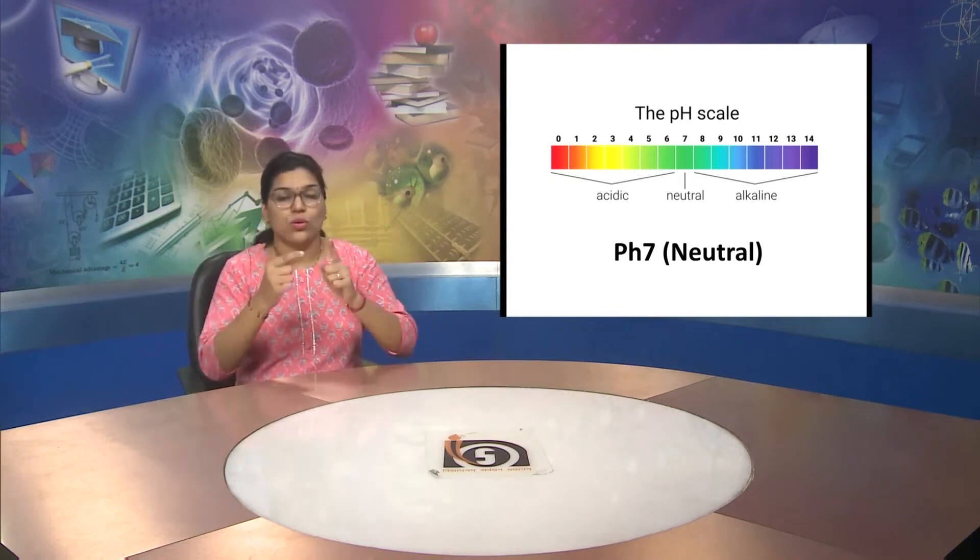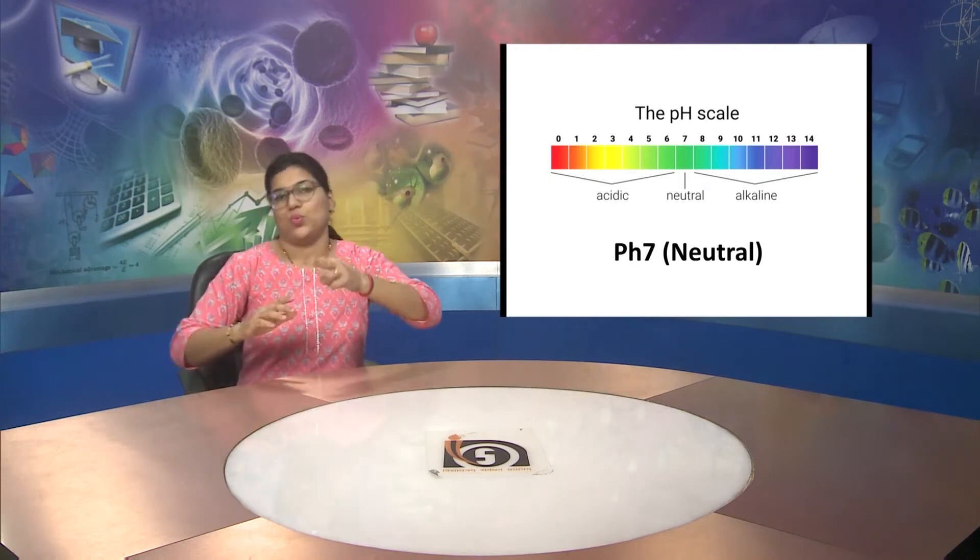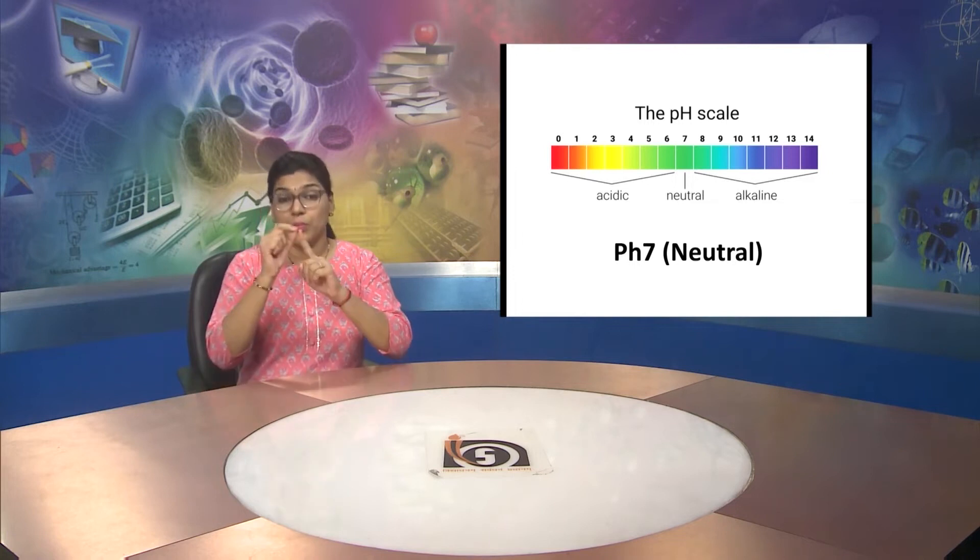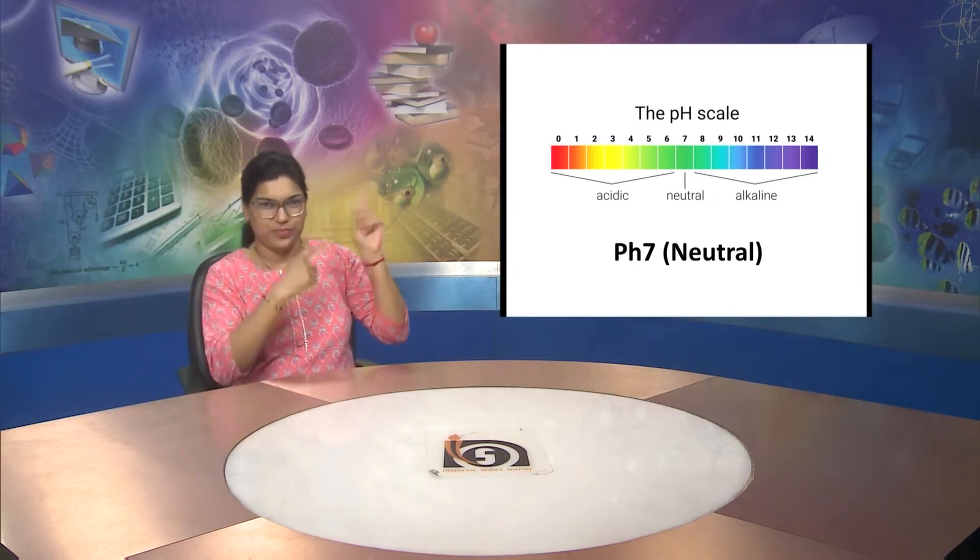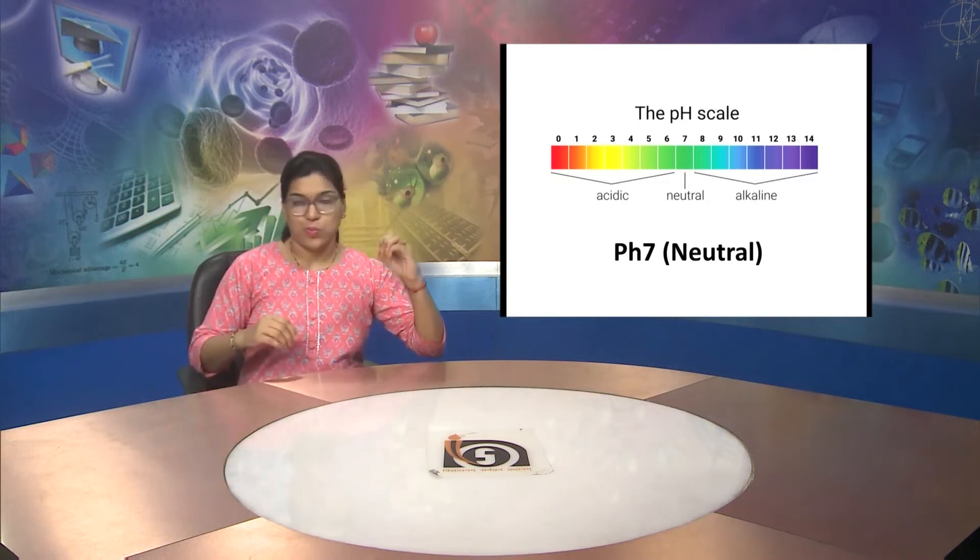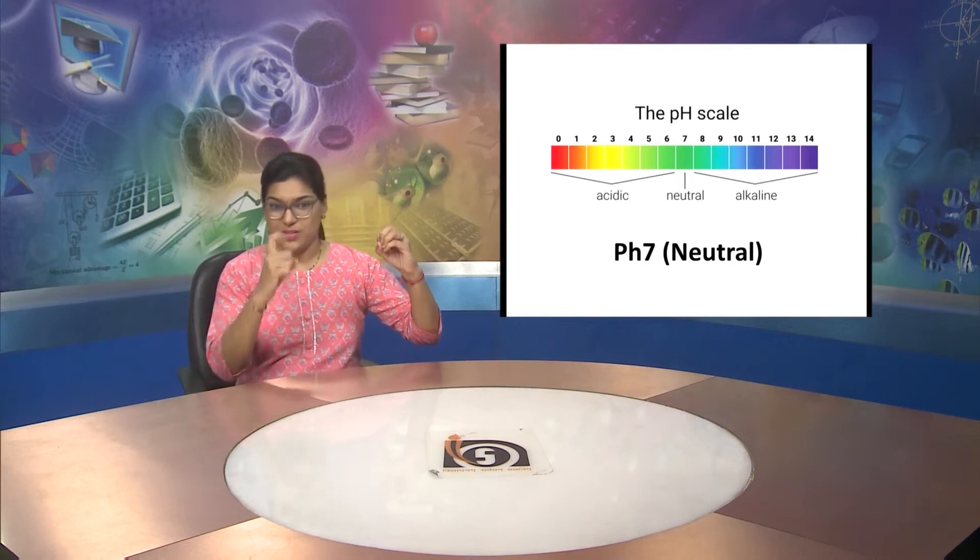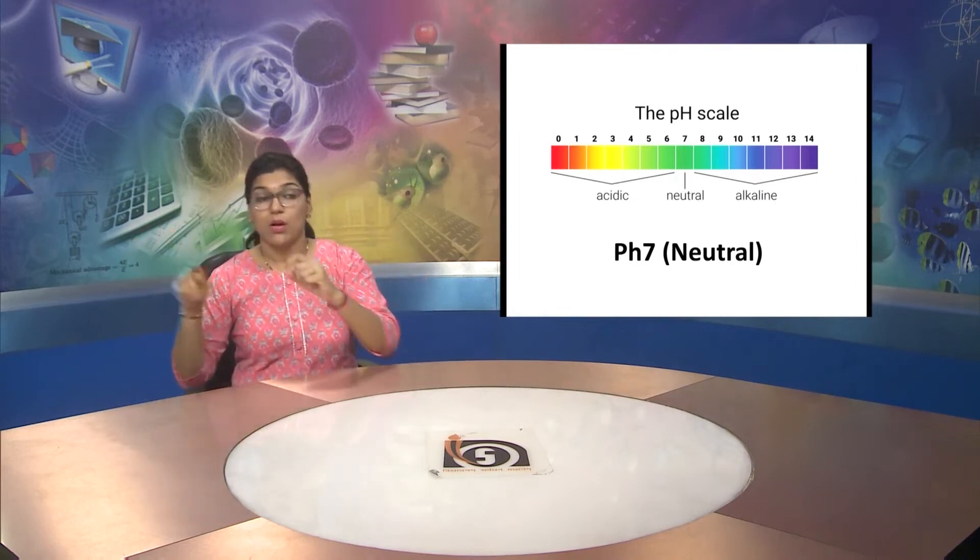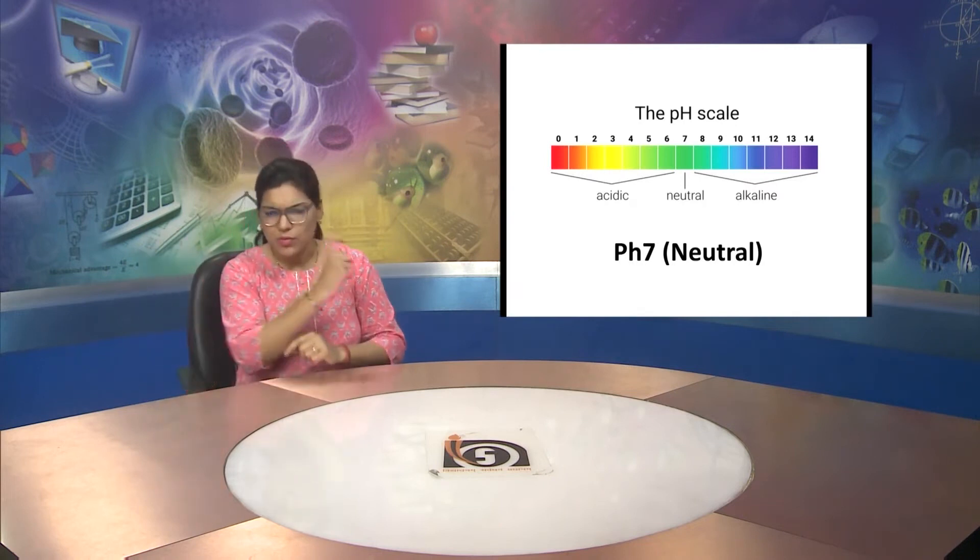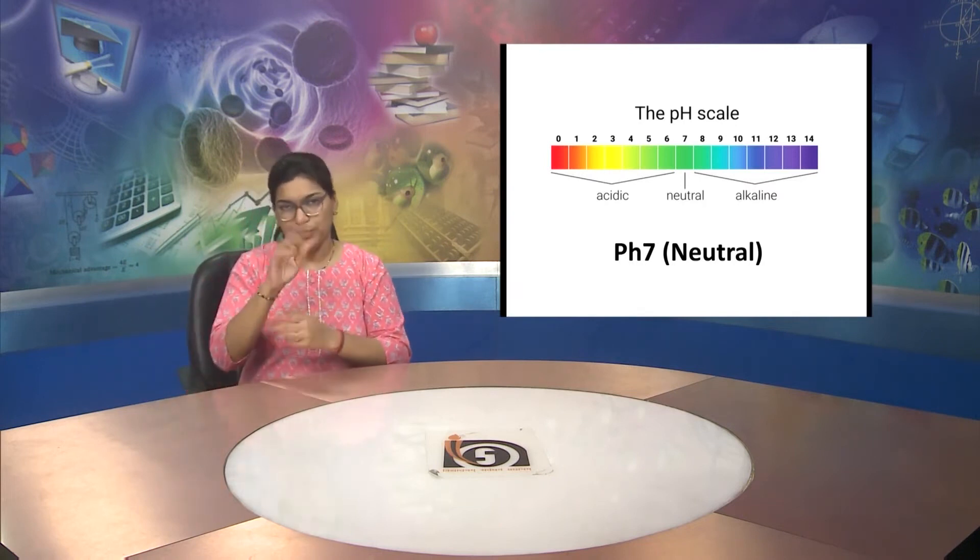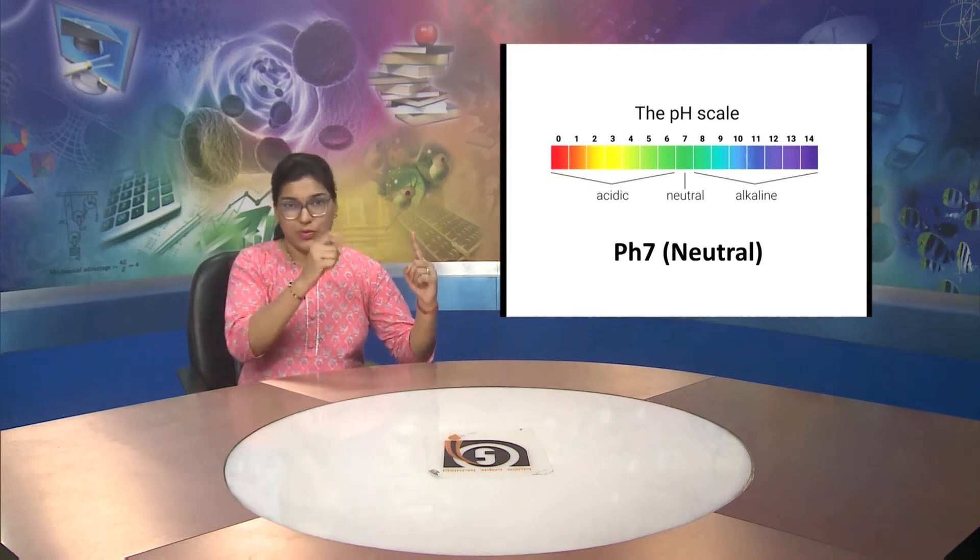The pH scale. pH scale is the scale as you can see in picture, starts from 0 to 14. From 0 to 6, it's acidic and on level 7, it's neutral.